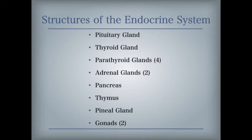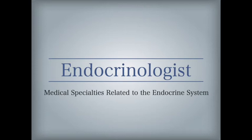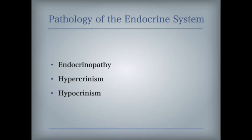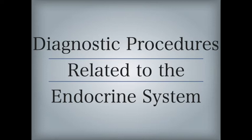An endocrinologist specializes in diagnosing and treating diseases and malfunctions of the glands of internal secretion. Endocrinopathy is any disease due to a disorder of the endocrine system. Hypercrinism is a condition caused by excessive secretion of any gland, especially an endocrine gland. Hypocrinism is a condition caused by deficient secretion of any gland, especially an endocrine gland. Diagnostic procedures include nuclear medicine and imaging techniques, as well as urine and blood testing used to measure endocrine hormone levels and detect the presence of anabolic steroids.